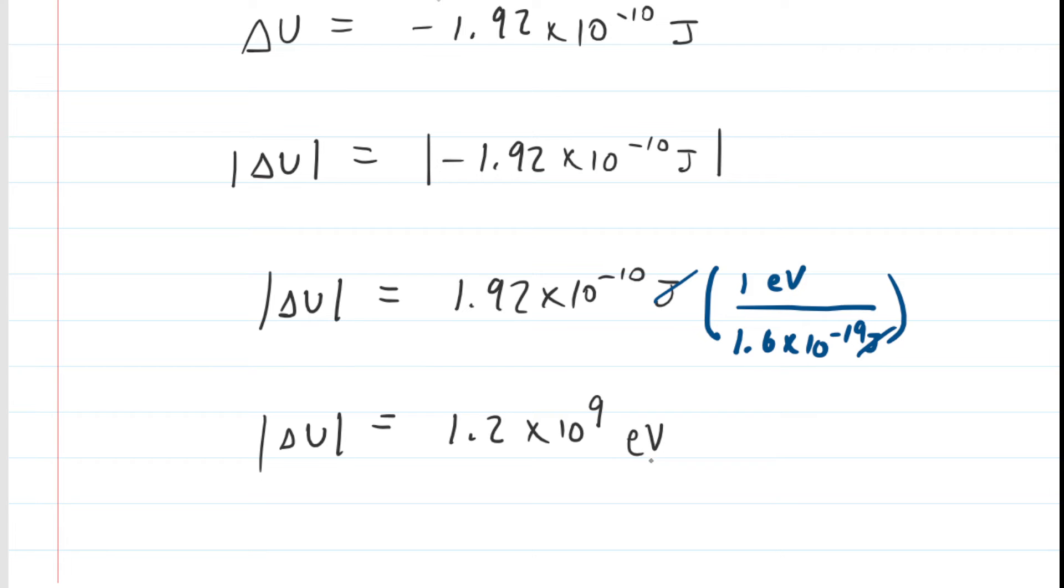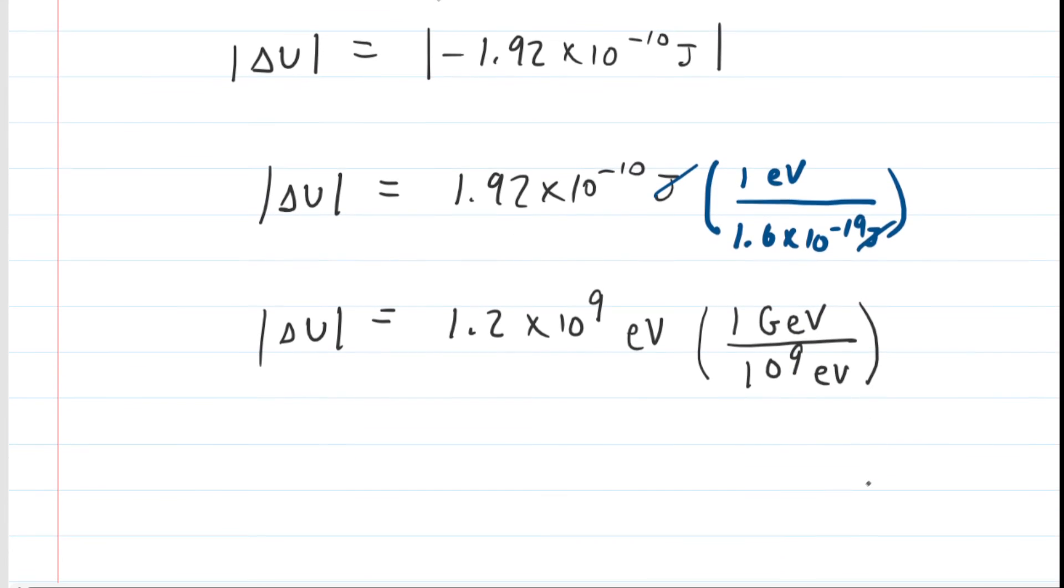If your homework system wants giga electron volts, we can do that. So we'll do one more conversion here. 1 giga electron volt is 10 to the power of 9 electron volts. So basically a giga of anything is a billion of that thing, in this case electron volts. We cancel out the electron volts and arrive at our final answer. For the magnitude of the change in electric potential energy, it turns out to be 1.2 giga electron volts.